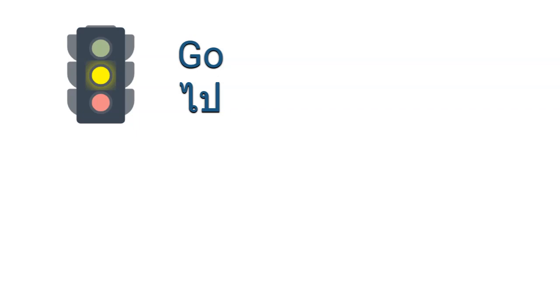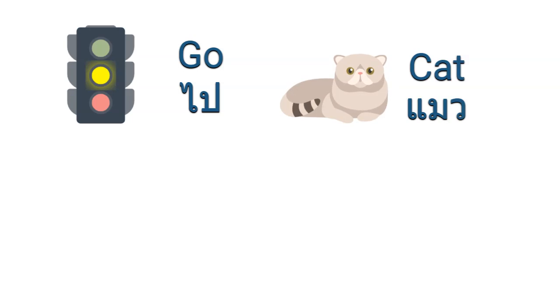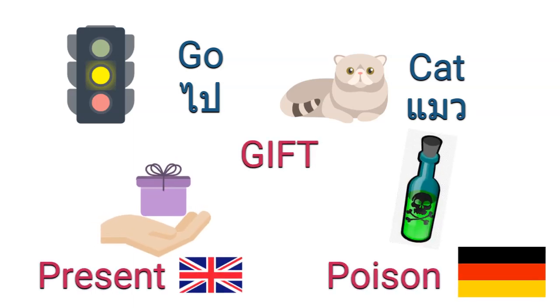Moreover, one meaning can be represented by many forms — the word 'go' in English, the word 'ไป' in Thai, or a green traffic light as a signal. For a domestic animal, we say 'cat' in English and 'แมว' in Thai — different forms, same meaning. On the other hand, the form GIFT means 'present' in English but means 'poison' in German. So if there were a real connection between form and meaning, there would be only one universal language and we would all speak the same language.